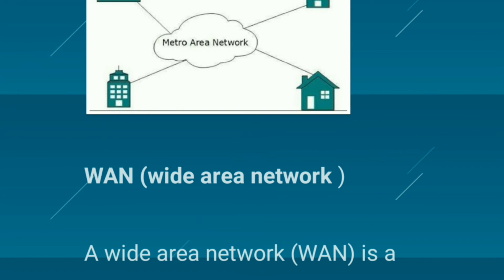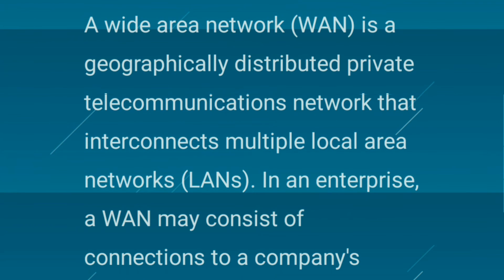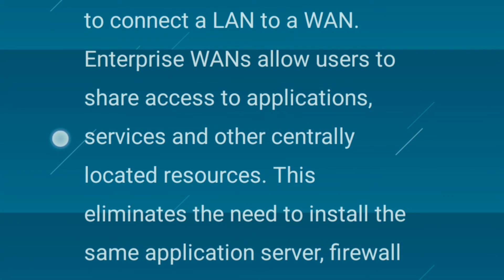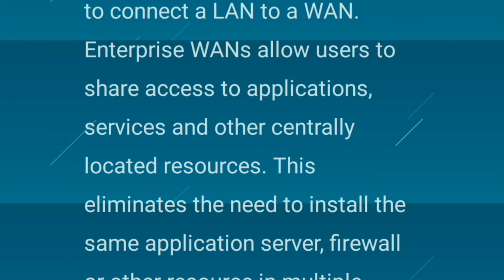A Wide Area Network is a geographically distributed private telecommunications network that interconnects multiple Local Area Networks in an enterprise. A WAN may consist of connections to a company's headquarters, branch offices, collection facilities, and cloud services. Typically, a router or other multi-function device is used to connect a LAN to a WAN, allowing users to share access to applications, services, and other centrally located resources.